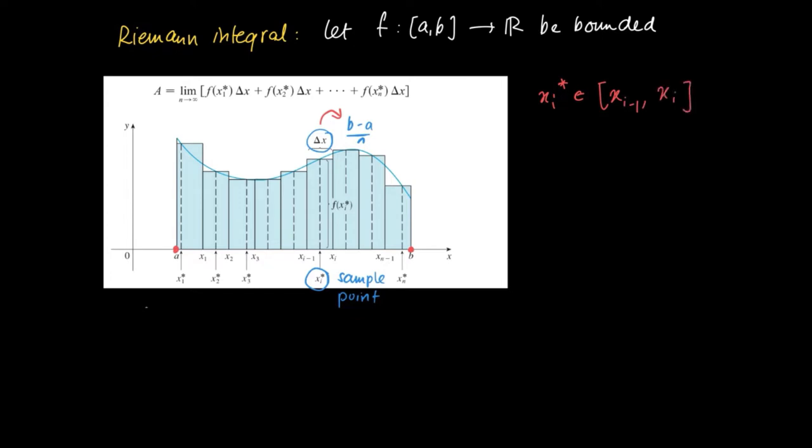For the left endpoint approximation of the surface area, we took x_i* = x_{i-1}. And for the right endpoint, we sample the point x_i* = x_i.